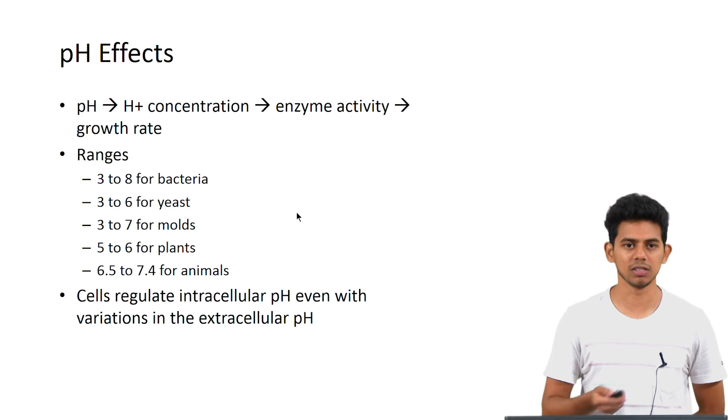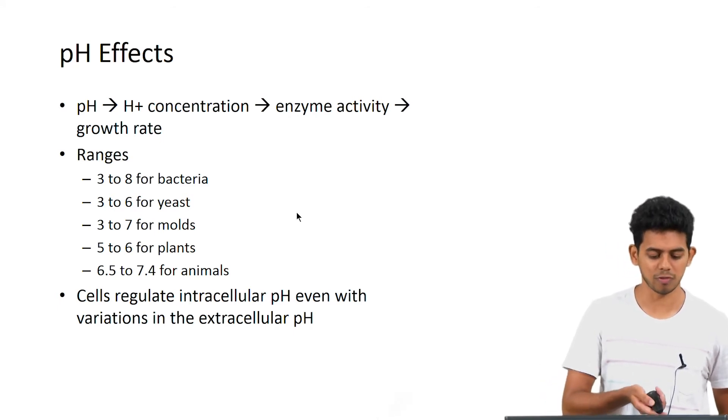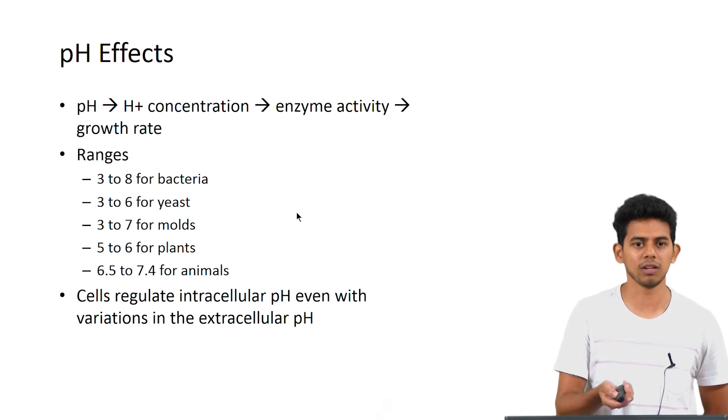Then coming to pH effect. pH is basically the H+ concentration which in turn affects the enzyme activity and the growth rate. These are few examples of different organisms and their preferable pH range. For mammalian tissues it is usually around 6.5 to 7.4 pH.